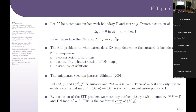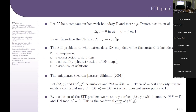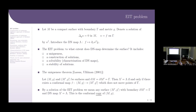Let M be a compact surface with boundary gamma and metric tensor g. Here we denote u_f a solution of the Laplace equation in the interior of the surface M with trace f on the boundary gamma. The operator that maps f to the normal derivative of u_f on gamma is called the Dirichlet-to-Neumann map, or DN map. The question on electric impedance tomography is: to what extent does the Dirichlet-to-Neumann map determine the surface?